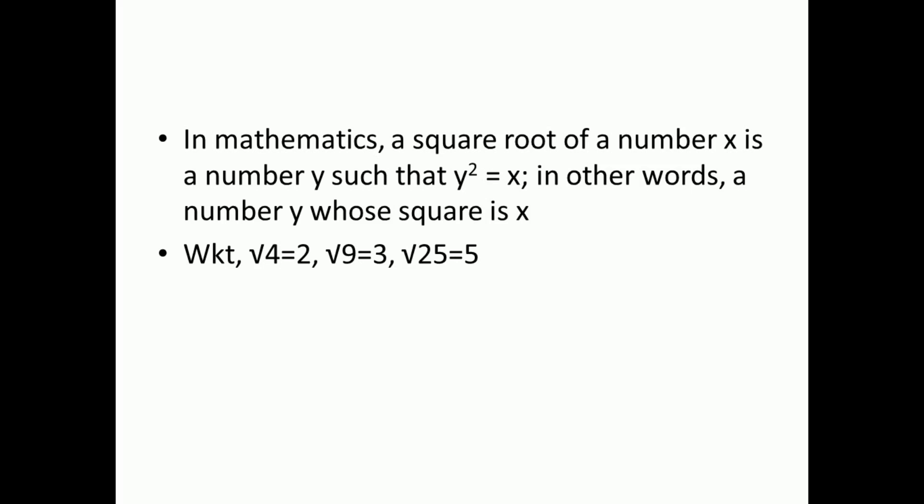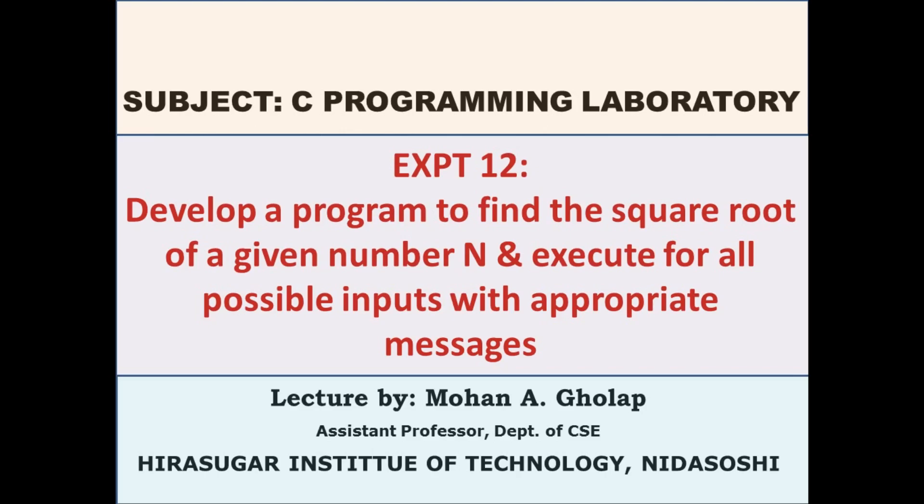For example, the square root of 4 is 2, because 2 × 2 = 4. Similarly, the square root of 9 is 3, because 3 × 3 = 9, and the square root of 25 is 5, because 5 × 5 = 25. In this way you can find the square root of a given number n.